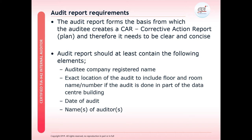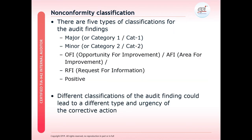The audit report should at least contain the following elements: the auditee company and its registered name; the exact location of the audit including rooms, room name, room number, and if the audit is done in part of the data centre building; the date of audit; and the name of the auditor or audit team members. When reporting the findings for the nonconformities, we need to classify them into various categories.